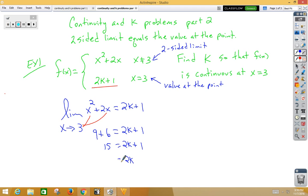2k would be 14, and k would be 7. That means if I plug in a 7 into the problem, the two-sided limit would equal the value at the point. So let's try another one.